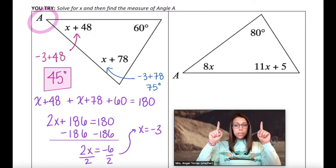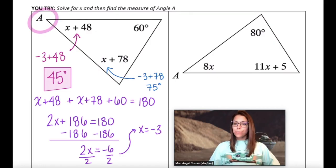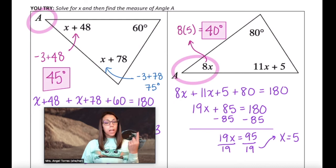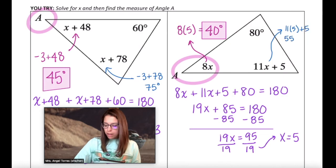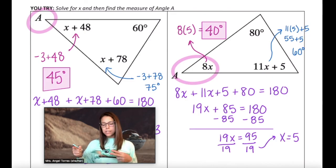Go ahead and try this one on your own now. Did you end up with x equals 5 and 40 degrees for angle A? Just to be sure, I'm going to check by plugging in x into my third angle and see if they add up to 180. 11 times 5 plus 5, that's 55 plus 5, which is 60. So does 40 plus 60 plus 80 equal 180 degrees? Yes, it does and both of these triangles were done correctly.